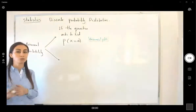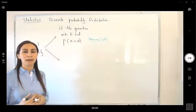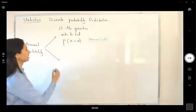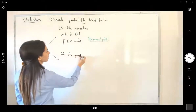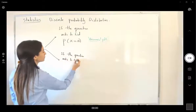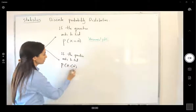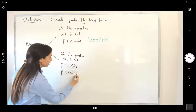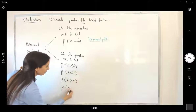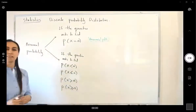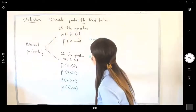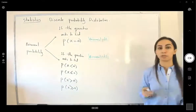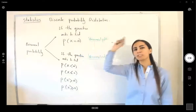If the question asks to find the probability of x being less than, less than or equal to, greater than, or greater than or equal to some value, we use binomial CDF. There is only one case where you use binomial PDF: when the question says find the probability of exactly one specific value.